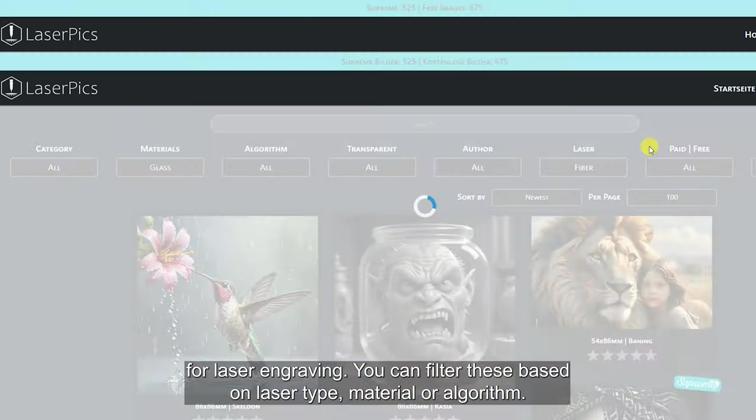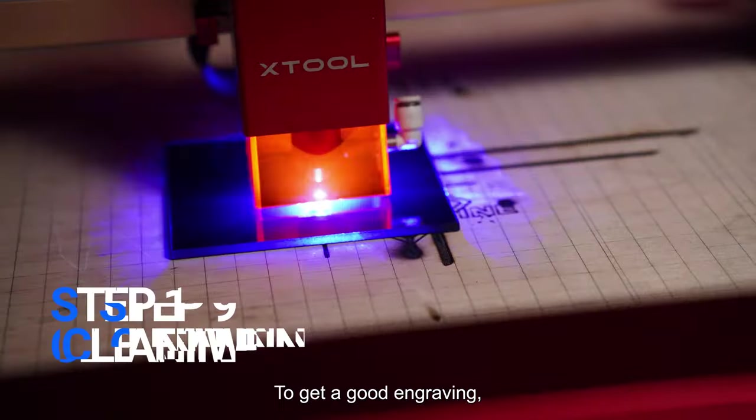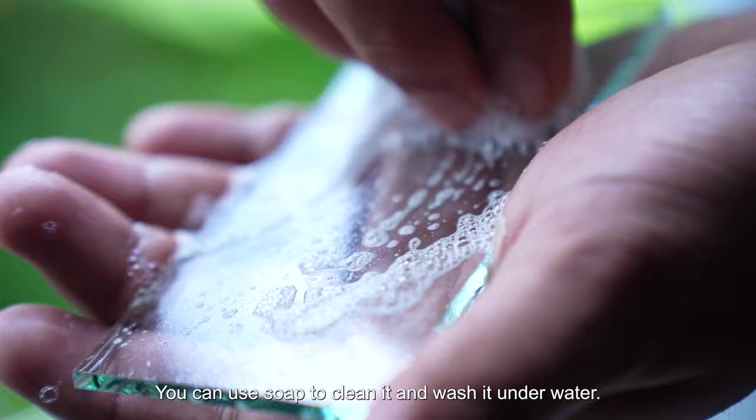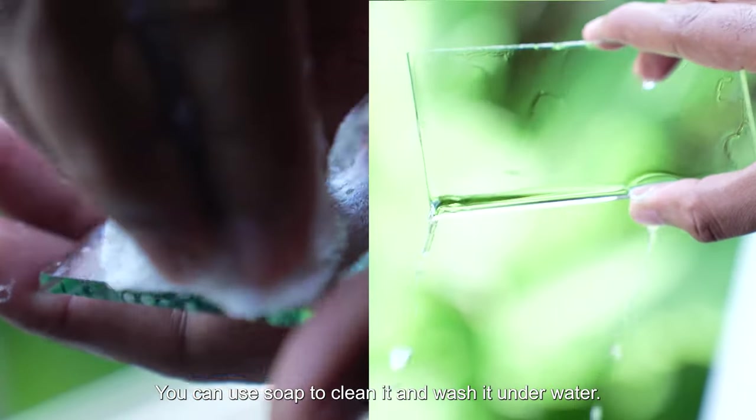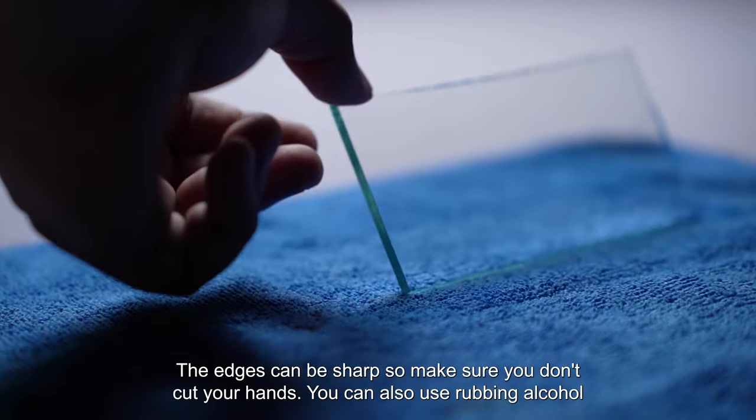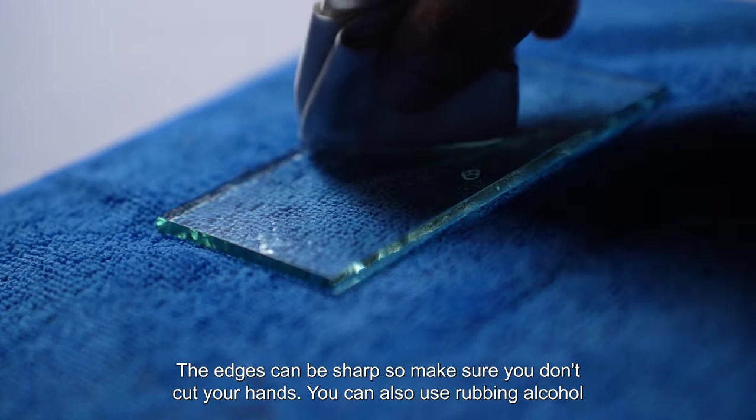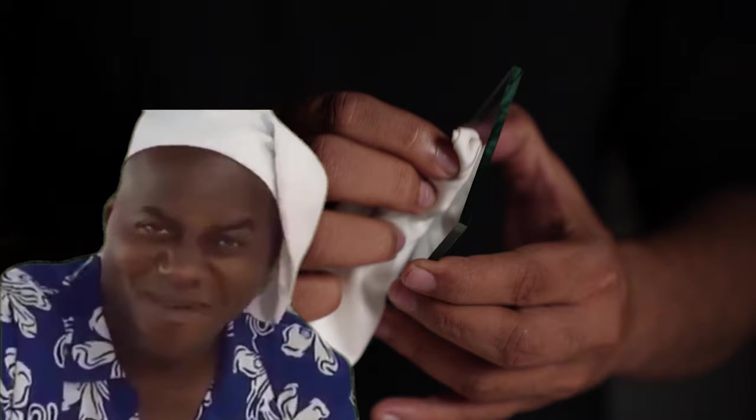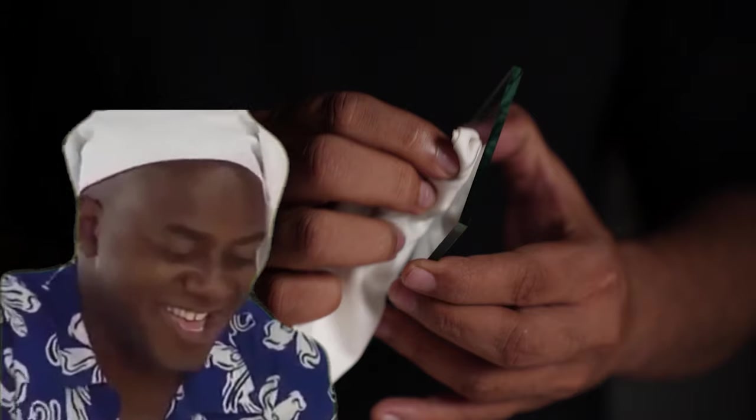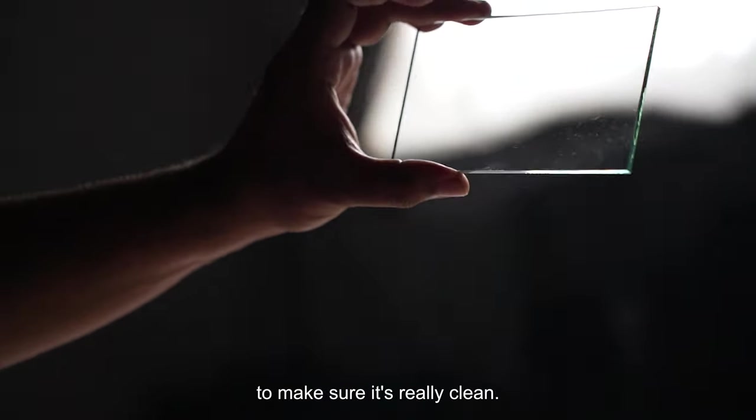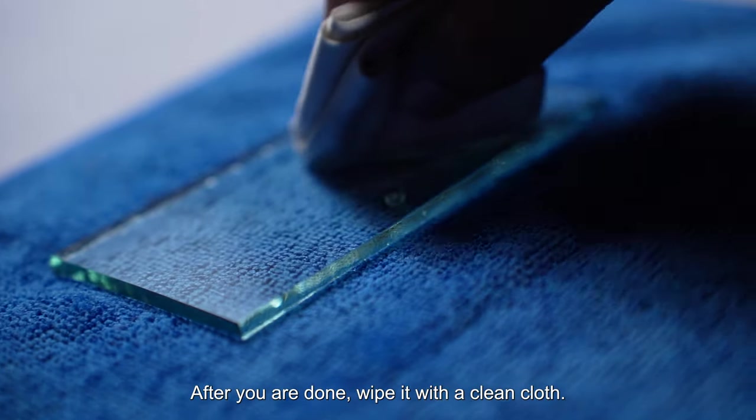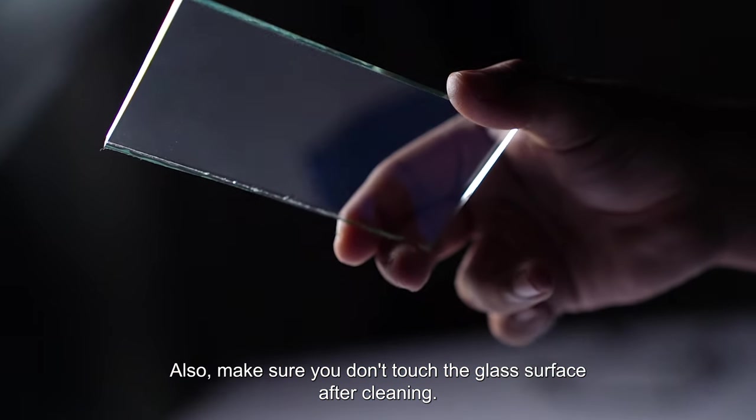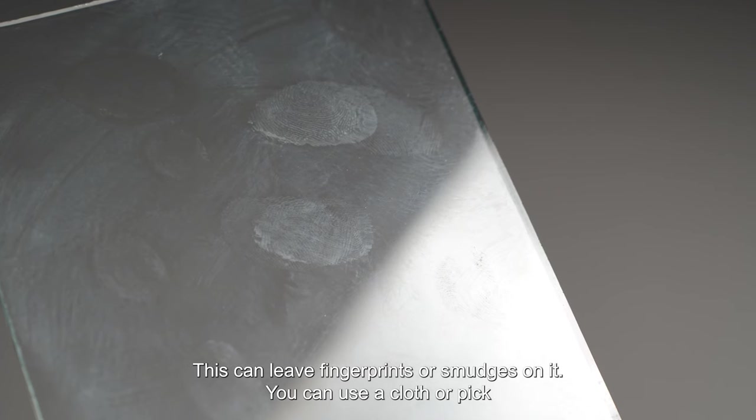To get a good engraving, your glass needs to be really clean. You can use soap to clean it and wash it under water. The edges can be sharp so make sure you don't cut your hands. You can also use rubbing alcohol and give it a nice rub - give it a good old rub to make sure it's really clean. After you are done, wipe it with a clean cloth. Also make sure you don't touch the glass surface after cleaning - this can leave fingerprints or smudges on it. You can use a cloth or pick it up by the sides.